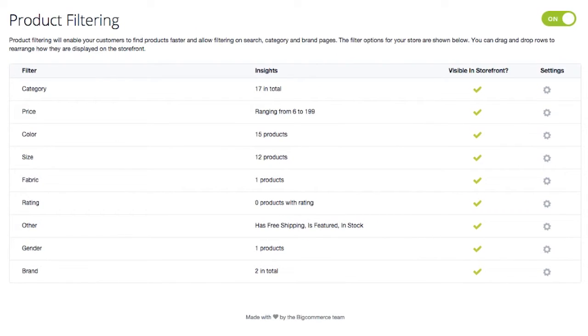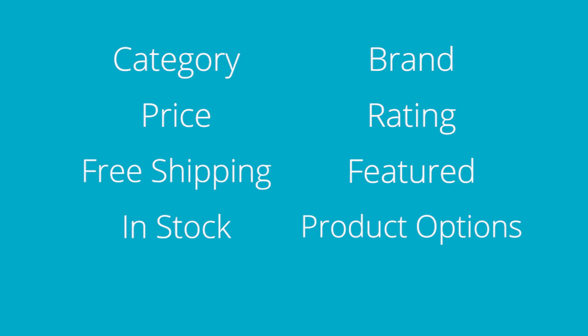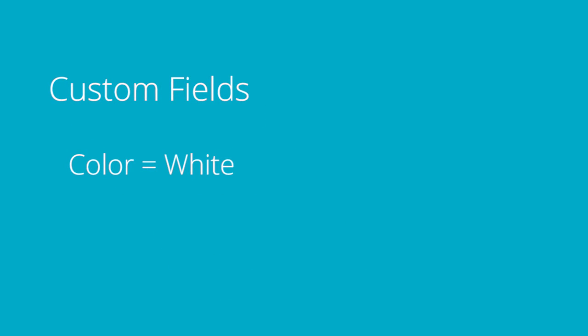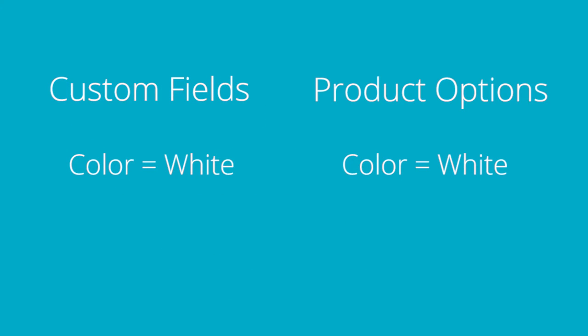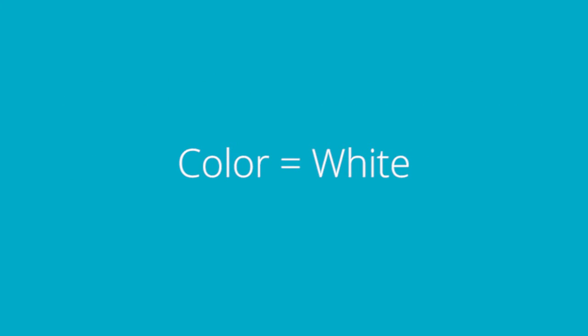You can see here that I have several filters on my products. BigCommerce supports up to 12 different filters. These can be any combination of category, brand, price, rating, free shipping, featured products, products in stock, product options, or you can even create your own custom filters, known as custom fields. If you add a custom field that has the same name as one of your product options, these two filters will be merged together to form one single filter, helping consolidate your products into a more powerful search result.